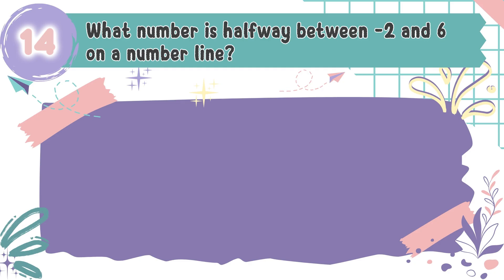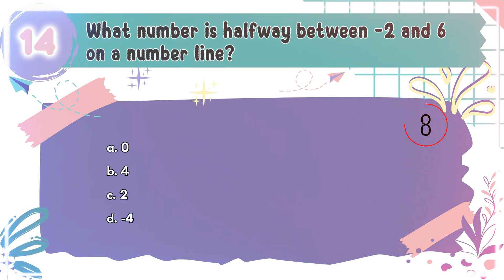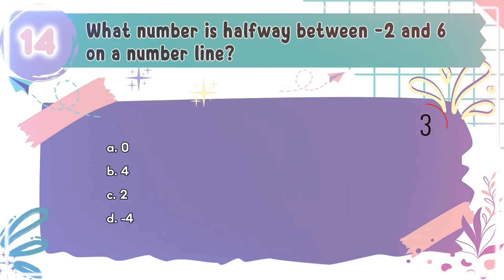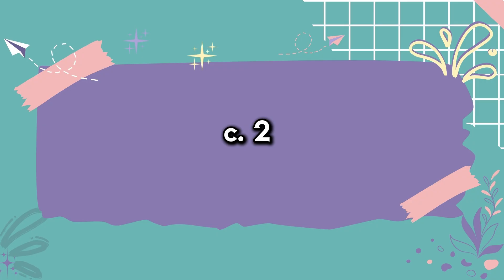Question number 14: What number is halfway between negative 2 and 6 on a number line? The choices are A. 0, B. 4, C. 2, D. Negative 4. The correct answer is C. 2. The number 2 is 4 units from negative 2 and 4 units from 6.